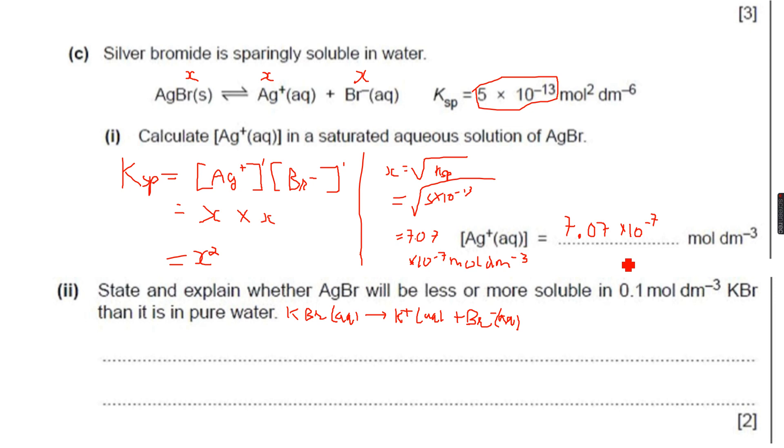So it forms a solid precipitate and therefore, the answer will be that the AgBr will be less soluble in KBr than it is in pure water because of the common ion effect. Simply, because we understand what the common ion effect means. So because of the common ion effect.